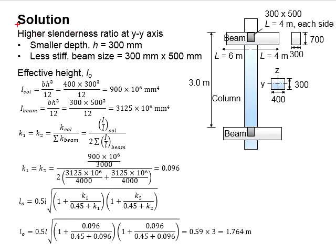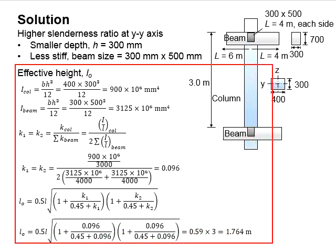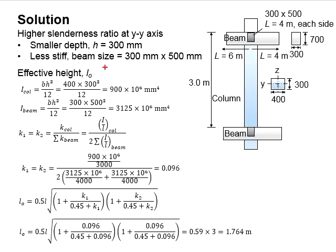Since we have already checked the more critical direction and found it to be a short column, if you go through another set of calculations for the larger width of the column, it should also end up to be a short column. You may try this on your own.